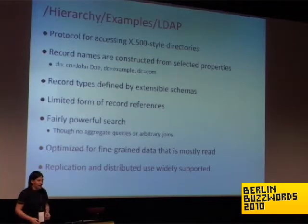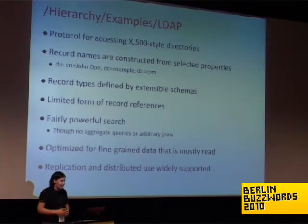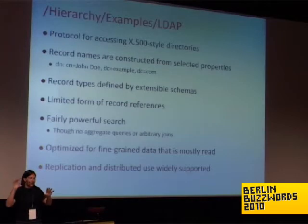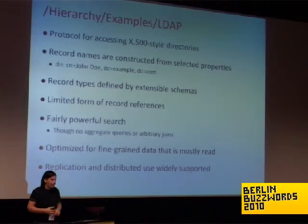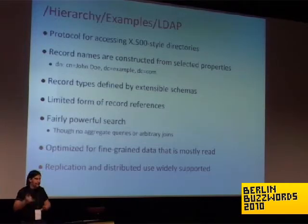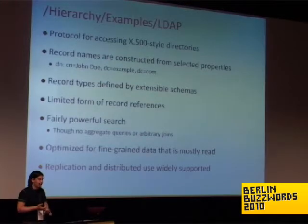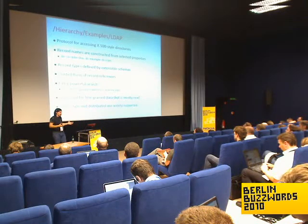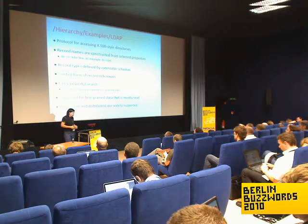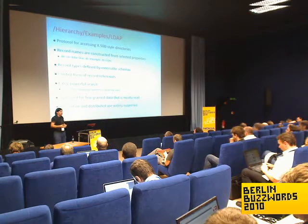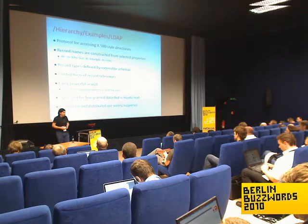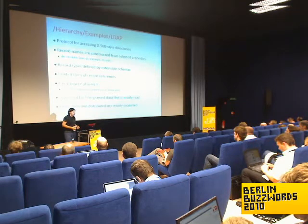LDAP — another system that's not as widely used as DNS and not as successful. It's got a couple of interesting features, like using type attributes as part of the path and the name of things. It's got schemas. It's got references across different records, even though that's a little bit limited in expressiveness. It's got pretty good search — there are limitations on what you can do with LDAP search, but for the stuff it does, it's very efficient and very powerful. It can do fine-grained data of a variety of different types and is very well supported. Most implementations support replication and distributed use, even for updating the data.